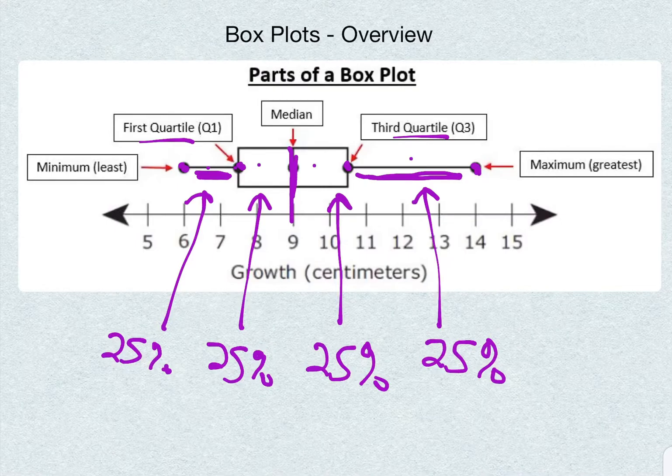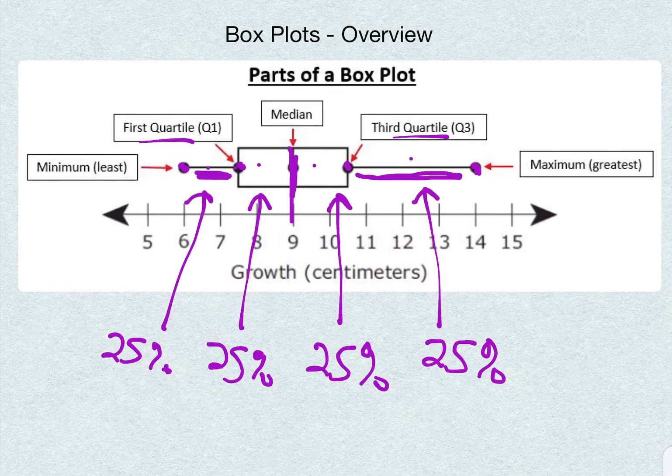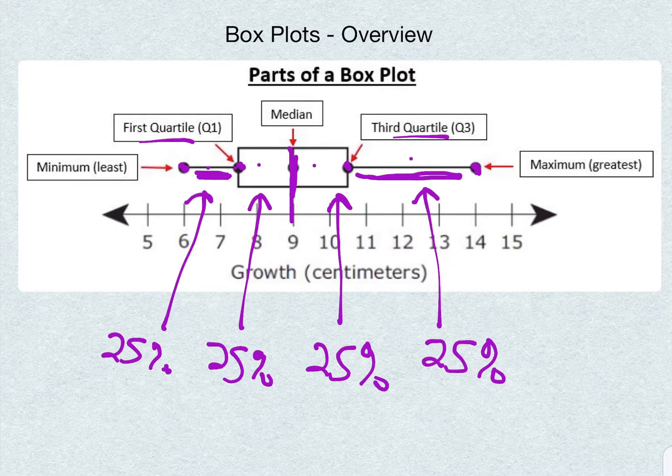Now, the interesting thing is we don't know exactly what those numbers are. We have a range, we can see on our number line what numbers they could be, but we don't know how many of each type there are. That's something that's different about a box plot.